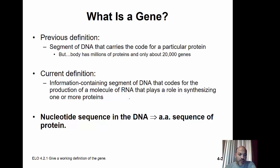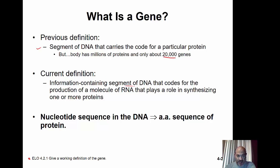Looking at learning objective 4.2.1, we need to give a working definition for a gene. One gene, one protein — basically. But we know there are far more proteins than genes. The genome project found only about 20,000 genes, so how can 20,000 genes code for millions of proteins? We had to modify our definition: a segment of DNA can actually code for one or more proteins.